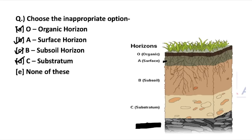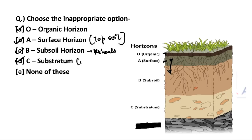The A horizon, or surface horizon, is also known as the topsoil. It is a good place for organisms to live and provides good material to plants. The B horizon, or subsoil, is rich in minerals — minerals that move down from the A horizon accumulate here. C is the substratum, also known as the parent material, because it consists of the deposits at the Earth's surface from which the soil is developed, defining the basic nature of the soil.